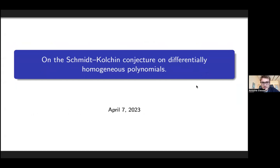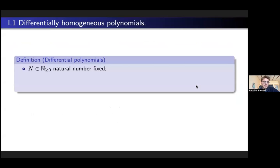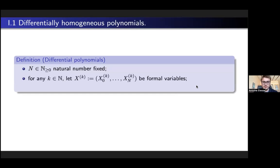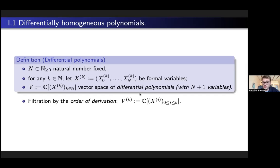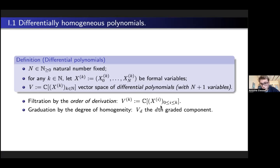Let us define what differentially homogeneous polynomials are. We take n a fixed natural number. For any k natural number we consider formal variables x_0^(k), x_1^(k), ..., x_n^(k), and form the vector space of differential polynomials in these formal variables — there are infinitely many of them. This space is filtered by the order of derivation and graduated by the degree of homogeneity. We denote V_d the graded component, which is infinite dimensional.